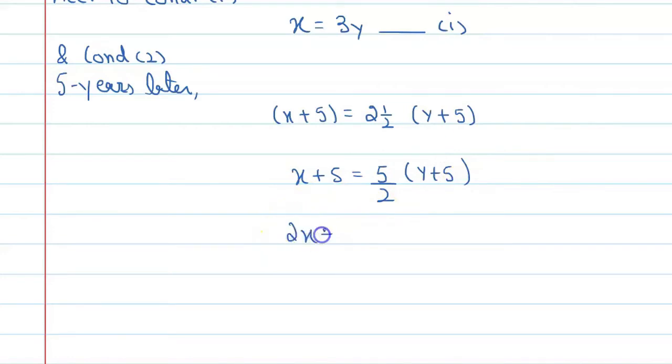So from there we will get an equation that is 2x minus 5y equal to 15. So this is the equation number 2.